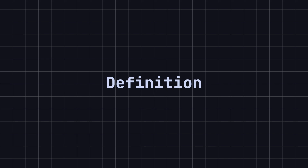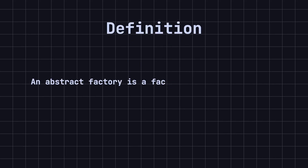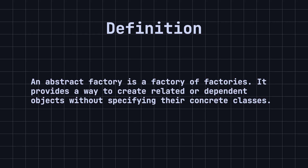Now let's look at the definition of an abstract factory. Simply put, an abstract factory is a factory of factories. It provides a way to create related or dependent objects without specifying their concrete classes. By defining an interface for creating a series of related objects and having concrete factories implement this interface, clients can use these factories to create the required objects without worrying about the specific implementation details.